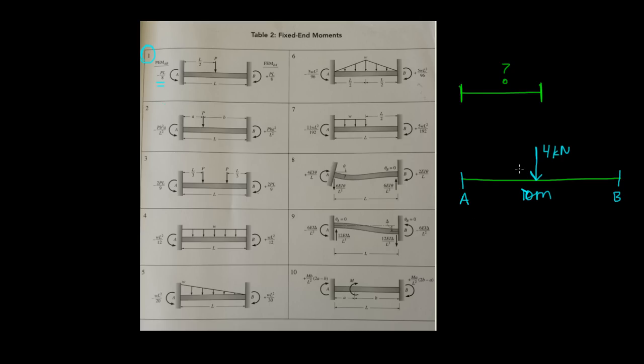In our case, our P is 4, and the length would be 10 meters. And then it'd be divided by 8. So the fixed-end moment, and it's negative. The fixed-end moment here would be 4 times 10 over 8, or 4 over 8 is really 1 over 2, so 10 divided by 2, this should be 5, negative 5 kilonewton meter.